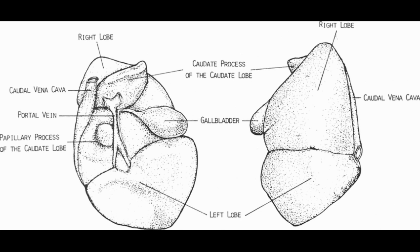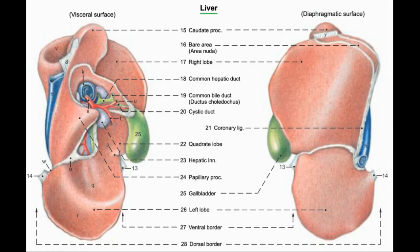Only the caudate hepatic lobe is divided into caudate process and papillary process. The caudate process of the caudate hepatic lobe of ox also contains a renal impression for the right kidney, formed by the right kidney on the visceral surface of the caudate hepatic lobe.